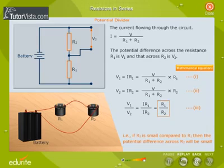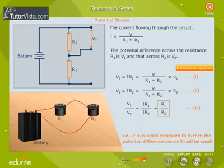That is, if R2 is small compared to R1, then the potential difference across R2 will be small.